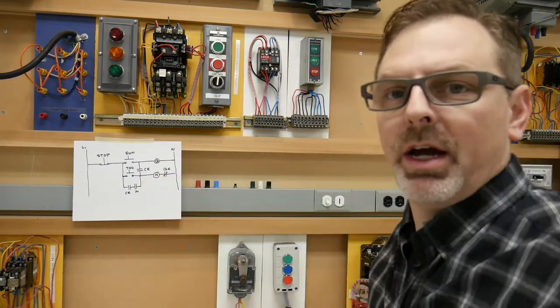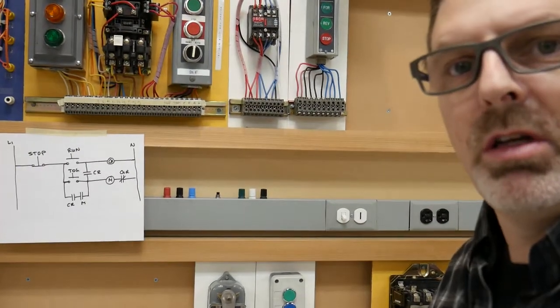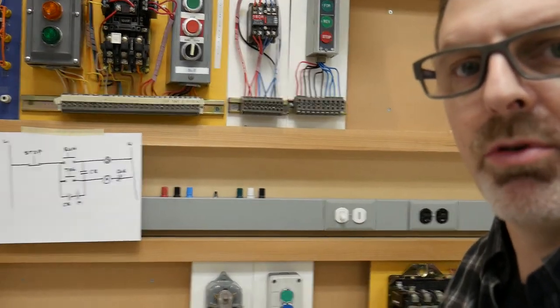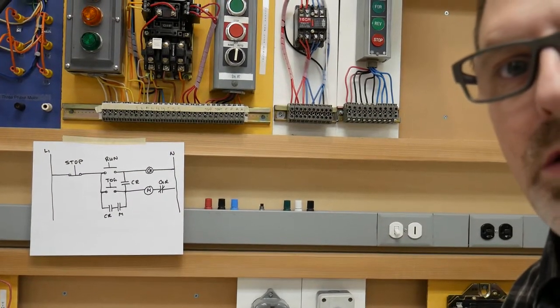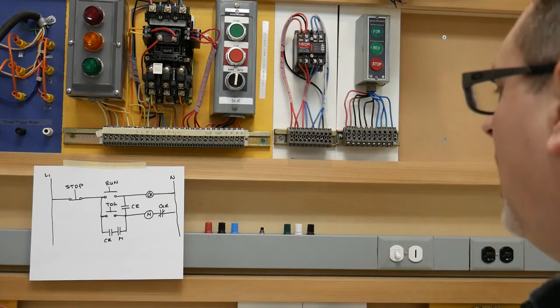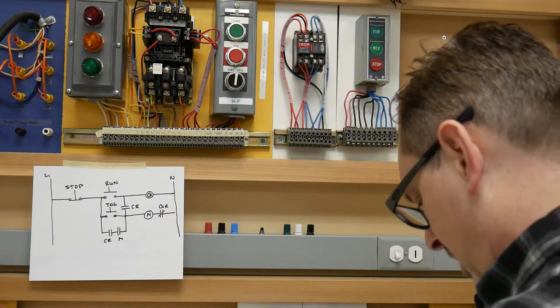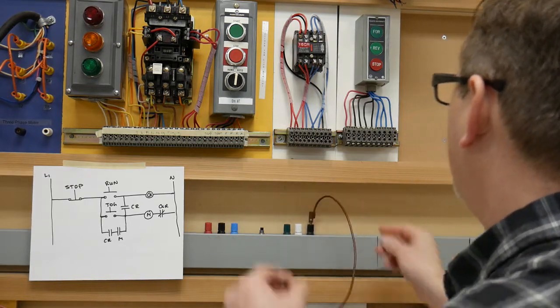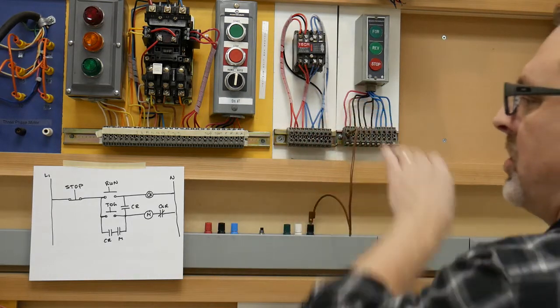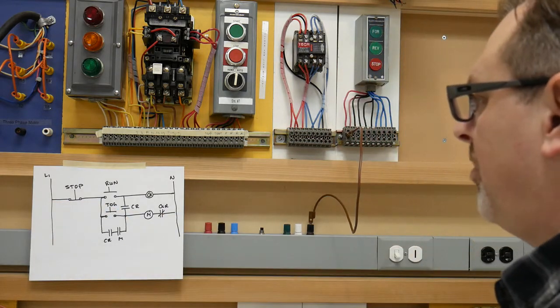So now we can, I've got the diagram here. I'll zoom in a little bit on it so you can sort of follow me wire this thing up that should get pretty much everything on camera for you for the most part. So we're going to start here, we need a line one heading to our stop push button. So we're going to go here and we're going to go into our stop push button. So that's that first wire there.